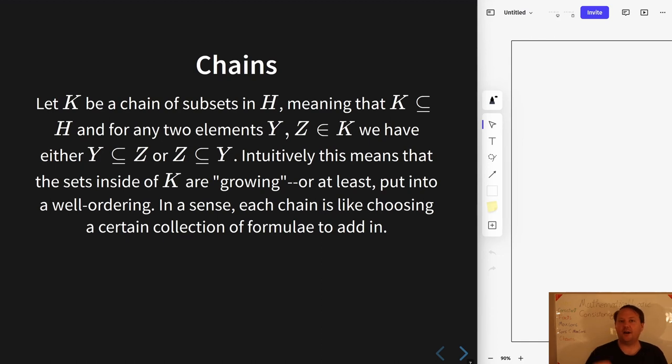And to be a chain, we require that if you take any two elements out of K, these will be sets of formulae. So Y and Z elements in K means that Y is a set of formulae, Z is a set of formulae. And to be a chain, we require that one must be a subset of the other. So that in some sense, they can always be kind of ordered, that there is some kind of like smaller to greater relationship among all these things. That's what we take a chain to be.